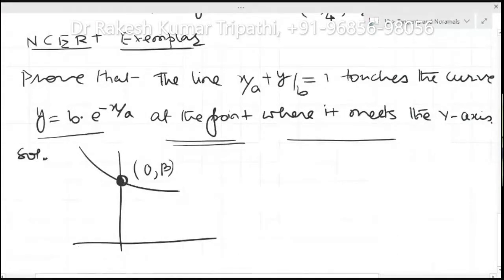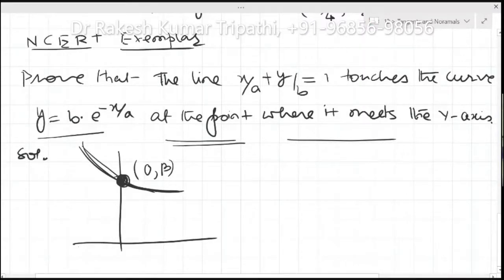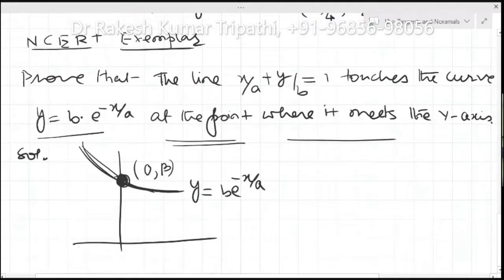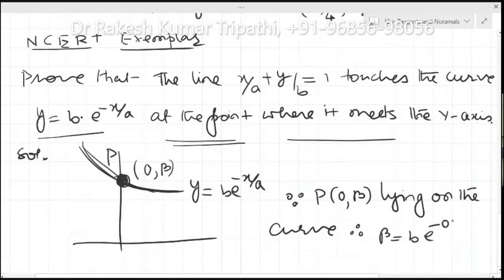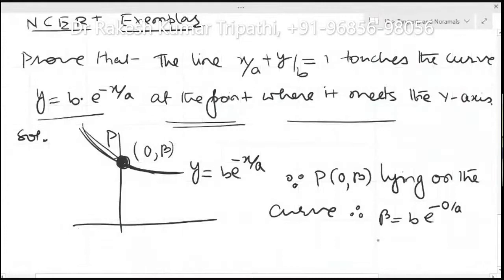I'm not sketching the exact graph of this curve — just make a curve like this which cuts the y-axis. At the y-axis, the x-coordinate will be 0. The equation of the curve is y = b·e^(−x/a). At the point (0, β), since it lies on the curve: β = b·e^(−0/a). Since e^0 = 1, therefore β = b.